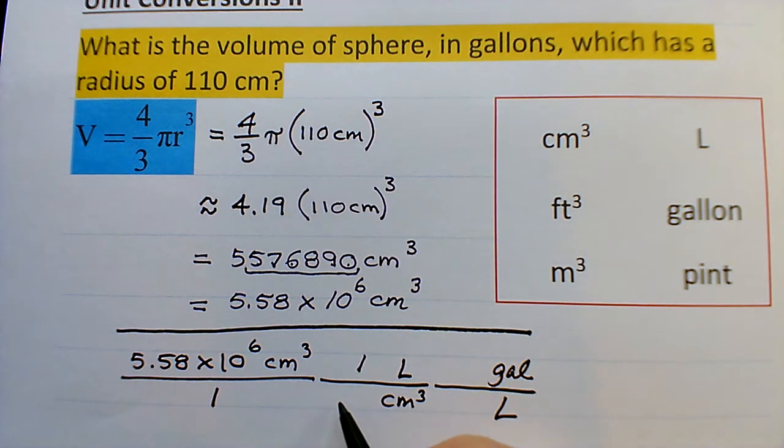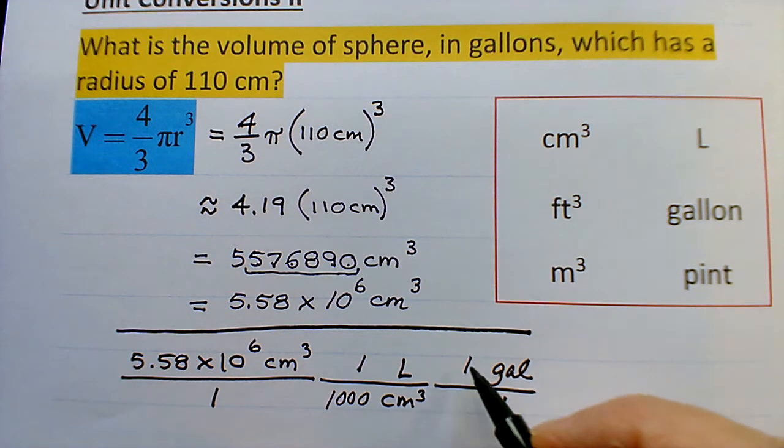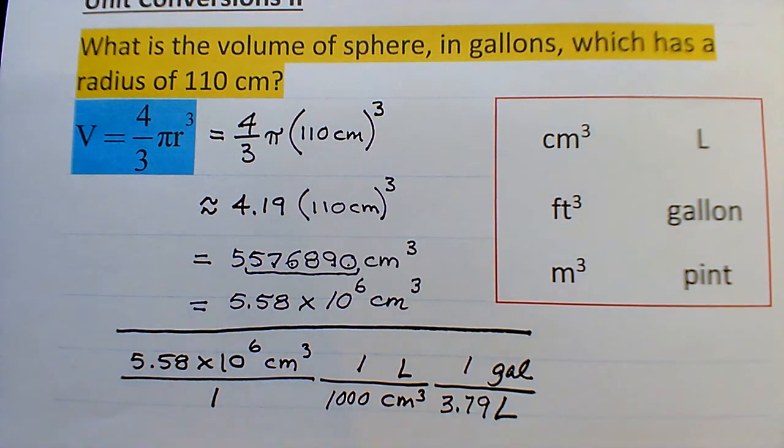So one liter is 1,000 cubic centimeters, and one gallon is 3.79 liters, approximately.